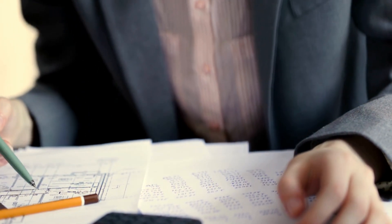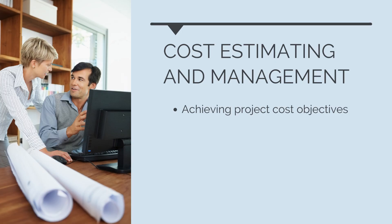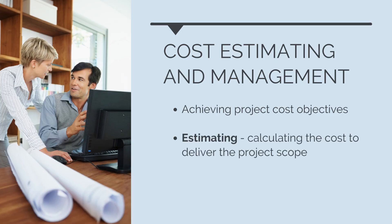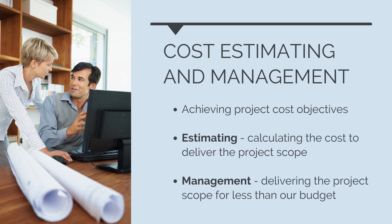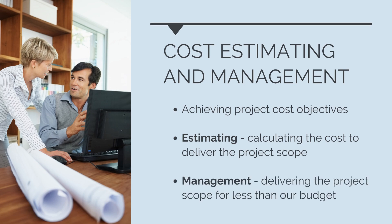There are two sides to this topic. First, we need to be able to estimate costs — this is the process of accurately calculating the cost to deliver a scope of works. Then, once we're delivering the project, we need to be able to manage expenditure so that we complete the project scope for less than our budget.